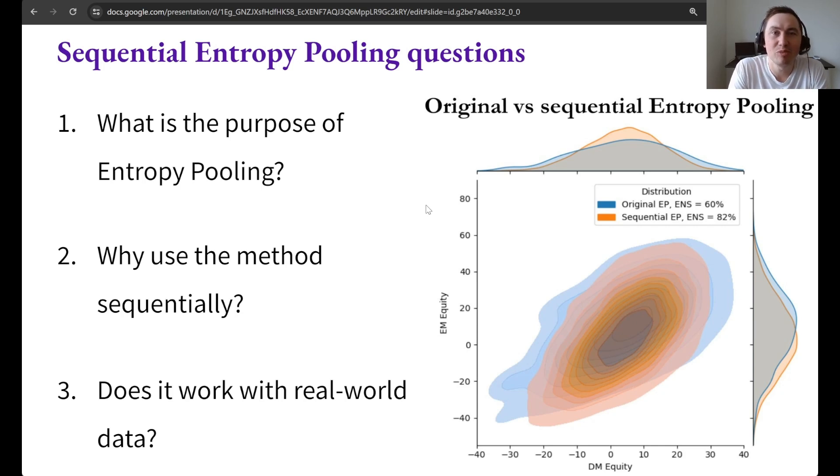But basically entropy pooling is a generalization of Bayesian updating where you have a prior fully general Monte Carlo distribution and then you input views about the posterior and that will then give you this posterior probability distribution using the entropy pooling method.